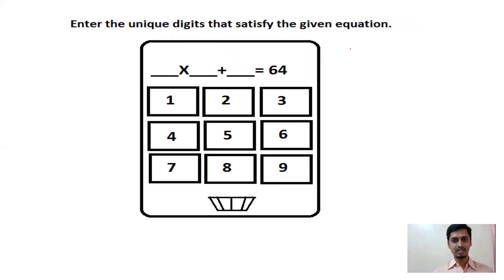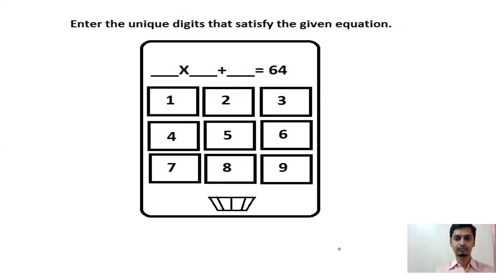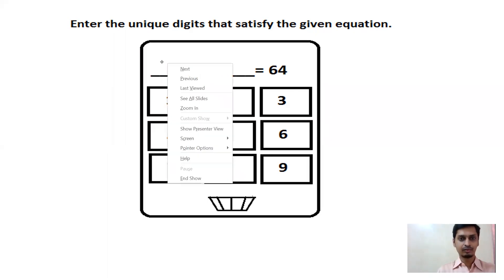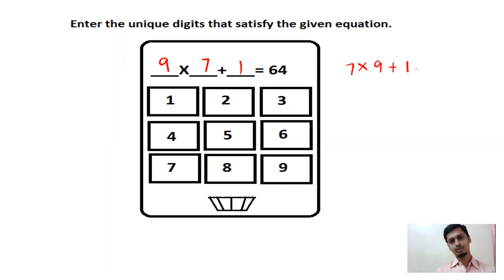Next: dash × dash + dash = 64. Pause and try it yourself. The answer: 9 × 7 = 63, then 63 + 1 = 64. Or equivalently 7 × 9 + 1 = 64. You can fill with either arrangement — as long as you satisfy the equation it's fine.